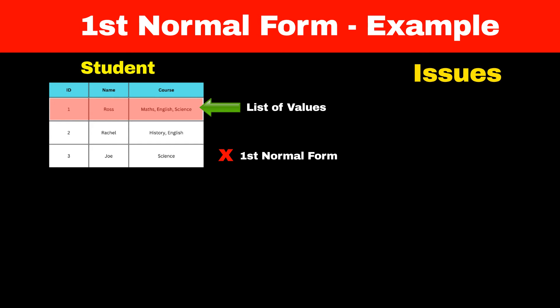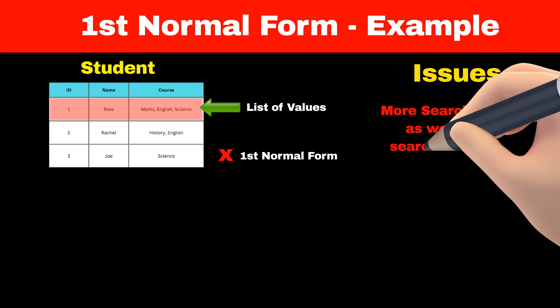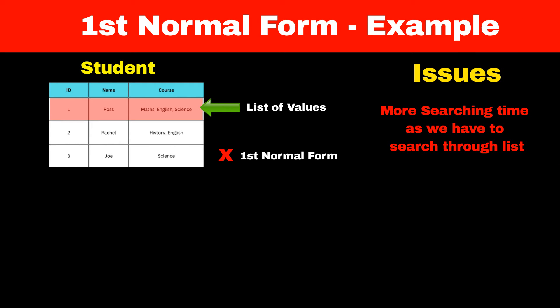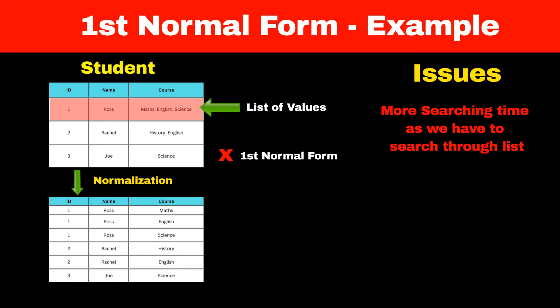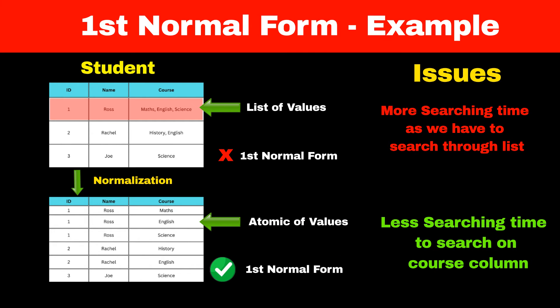This can cause various issues. For example, if you want to check which students have enrolled for the English course, it would be a terrible idea to perform a search on the course column because it will take a lot of time. One solution is to create a separate row for each course in our student table, meaning there will be three rows for Ross, each containing a different course value. Now the course column contains atomic values, so the table follows first normal form in SQL.